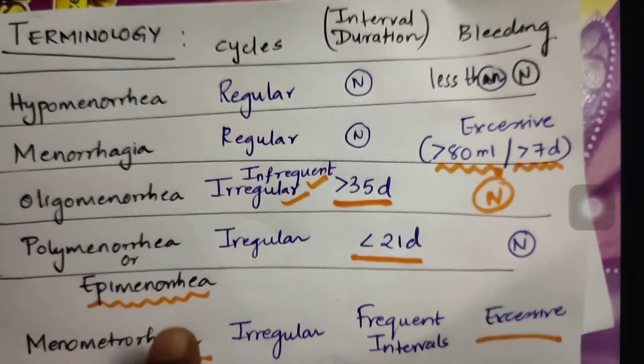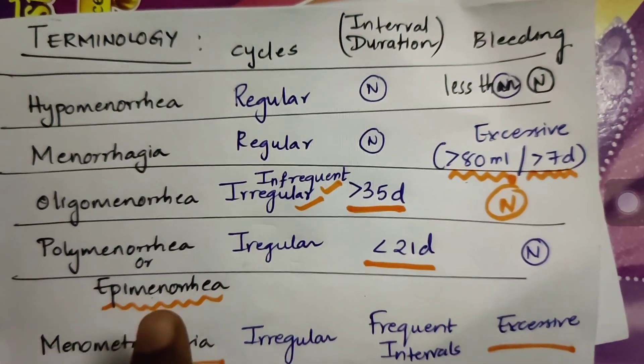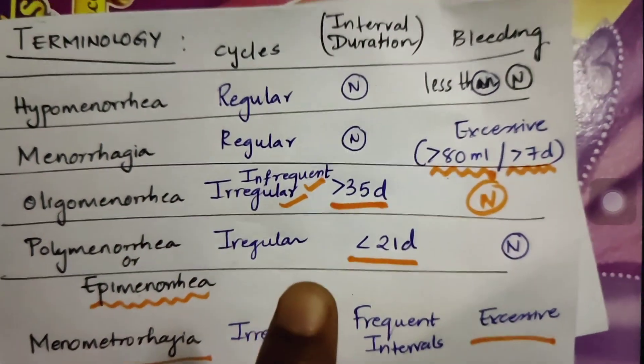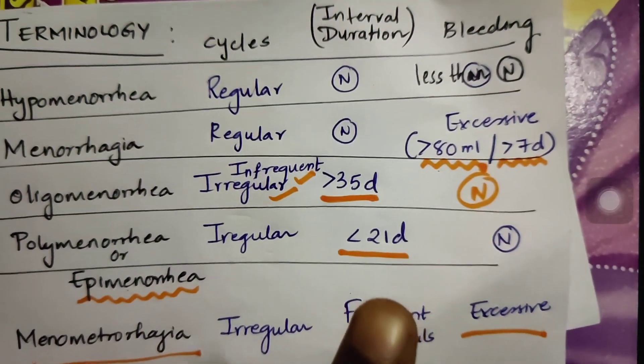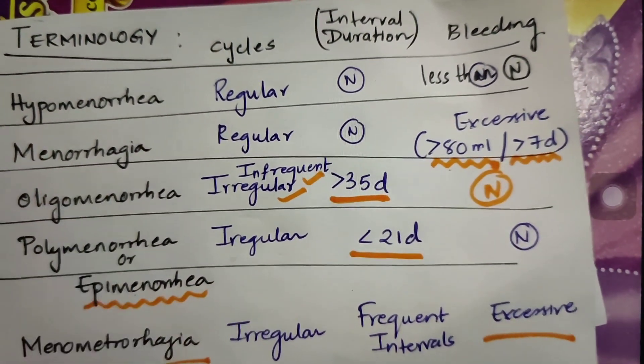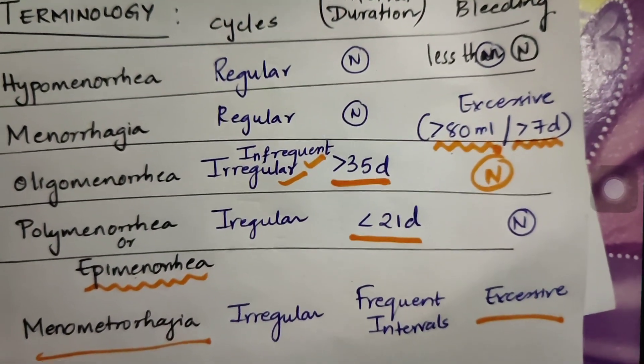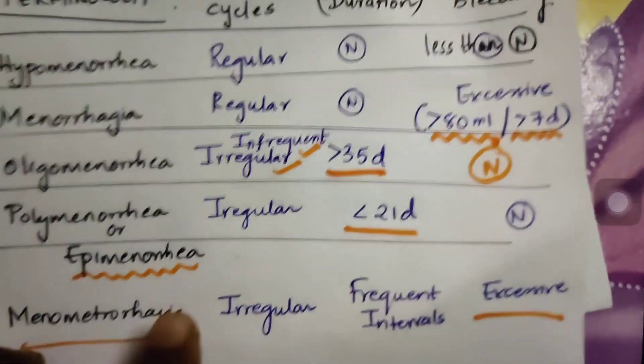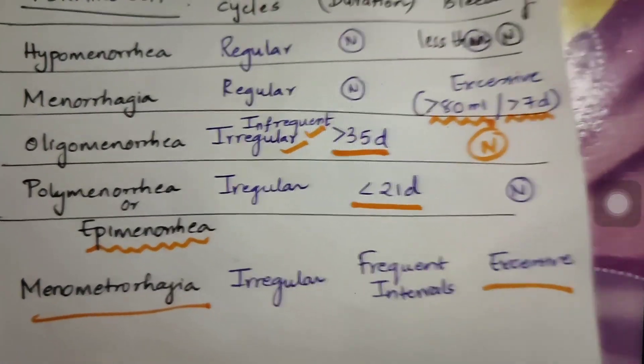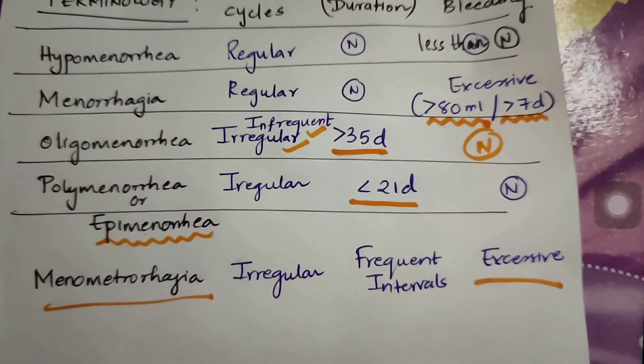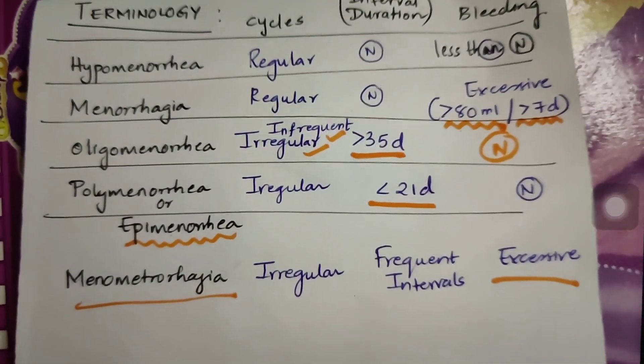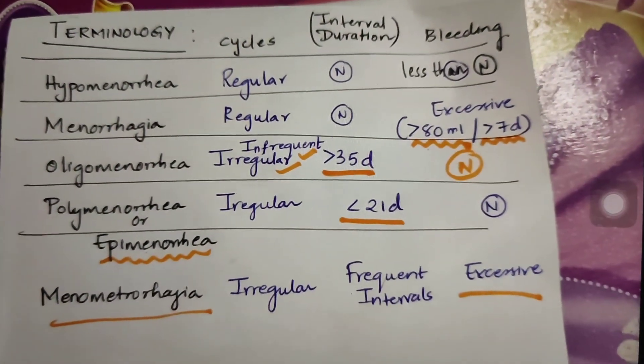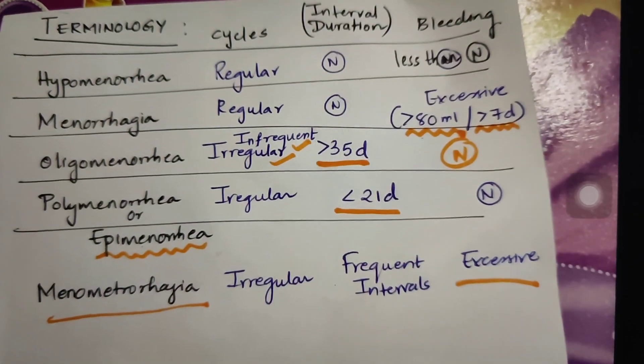Polymenorrhea, another term is epimenorrhea. Here also the cycles are irregular, same like oligo, but the duration differs: less than 21 days and the bleeding is normal. When we comment on hypo and menorrhagia, it is about amount of bleeding, whereas oligo and poly, it is about duration, the interval between two cycles. And now there is another term which is mix and match between the above two terms, which is menometrorrhagia. Meno means excessive bleeding and metro means irregularly, that means it occurs between the normal cycles, infrequent bleeding between the normal cycles. These are a few important terminologies you need to know in this topic.